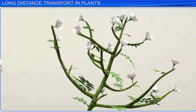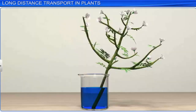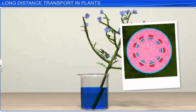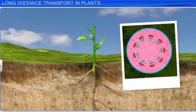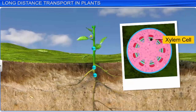Have you ever wondered what happens when we put a twig of white flowers in colored water? The white flowers gradually begin to color. After some time, if you examine the cut end of the twig, you will spot the colored region through which water was transported inside the twig. This colored region belongs to xylem cells in vascular bundles, through which water is transported in plants.